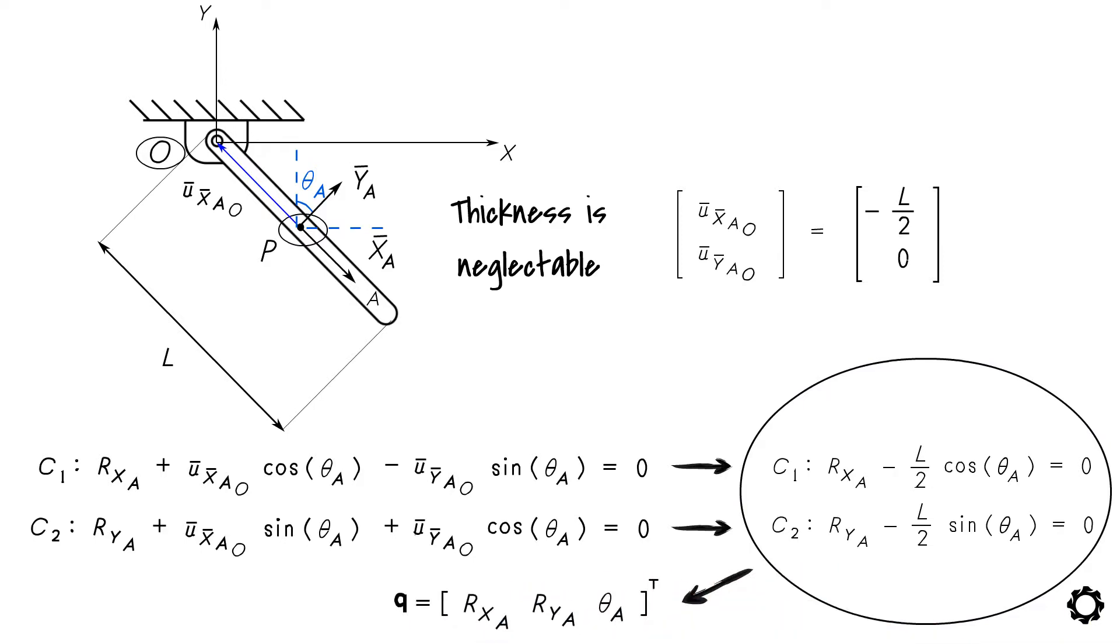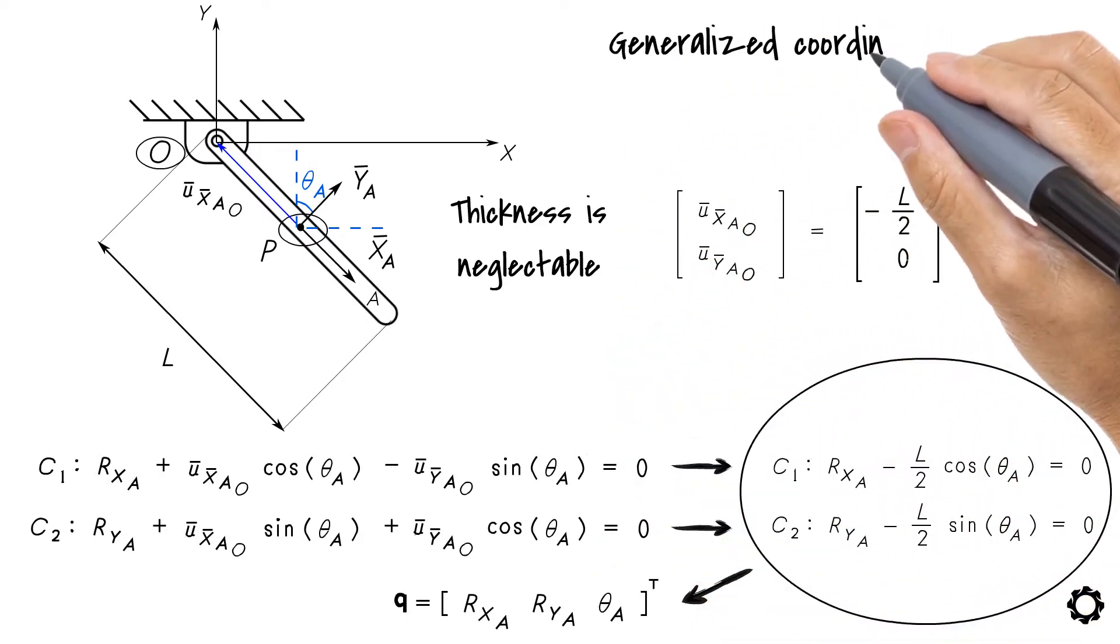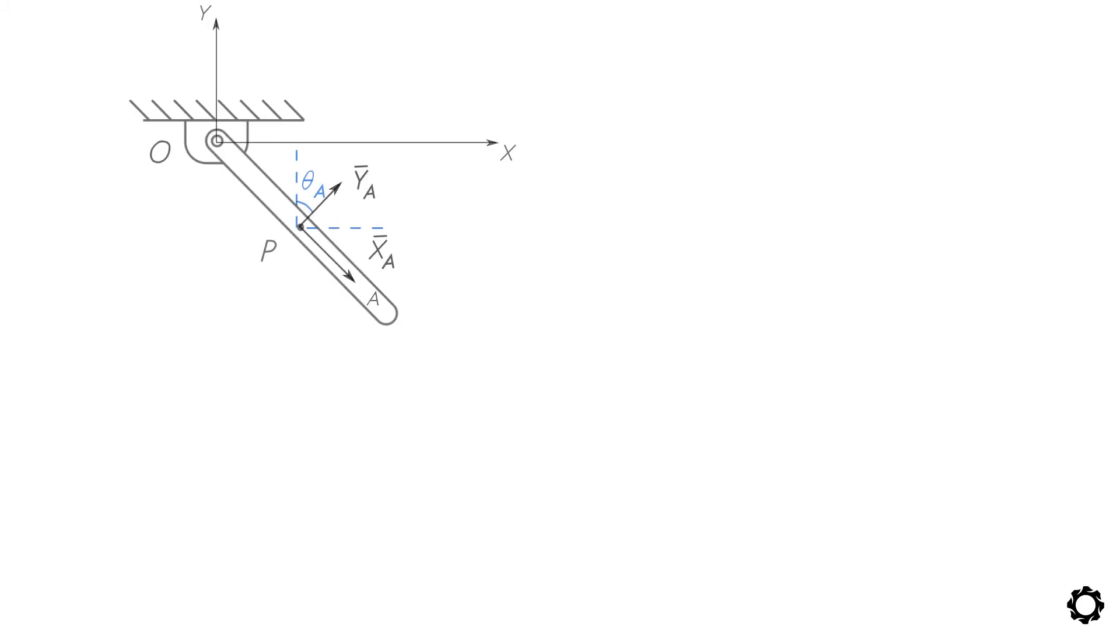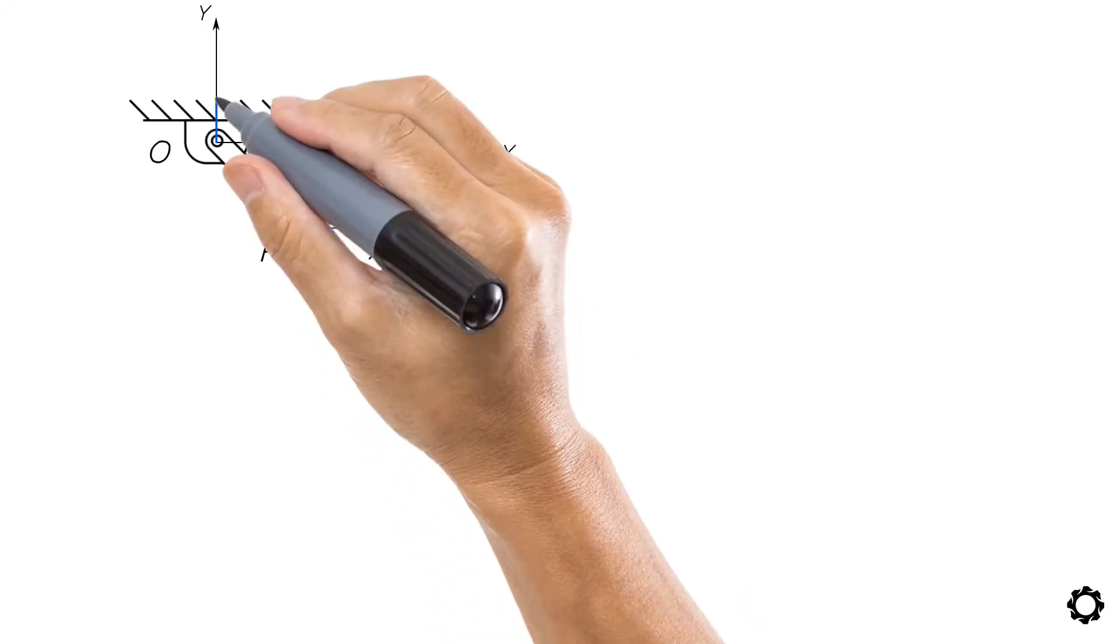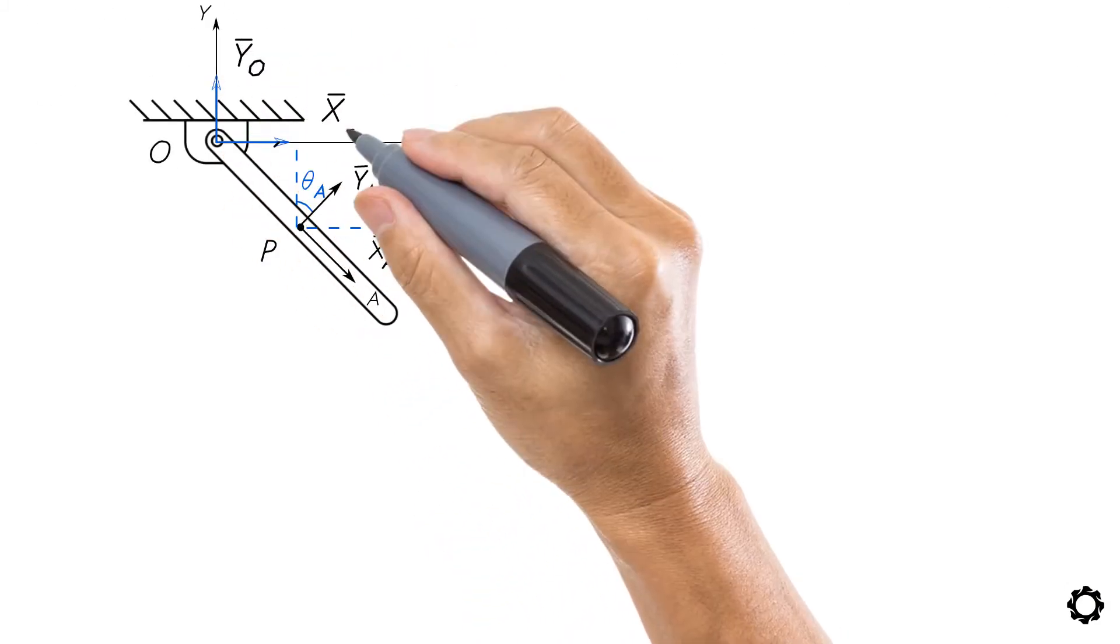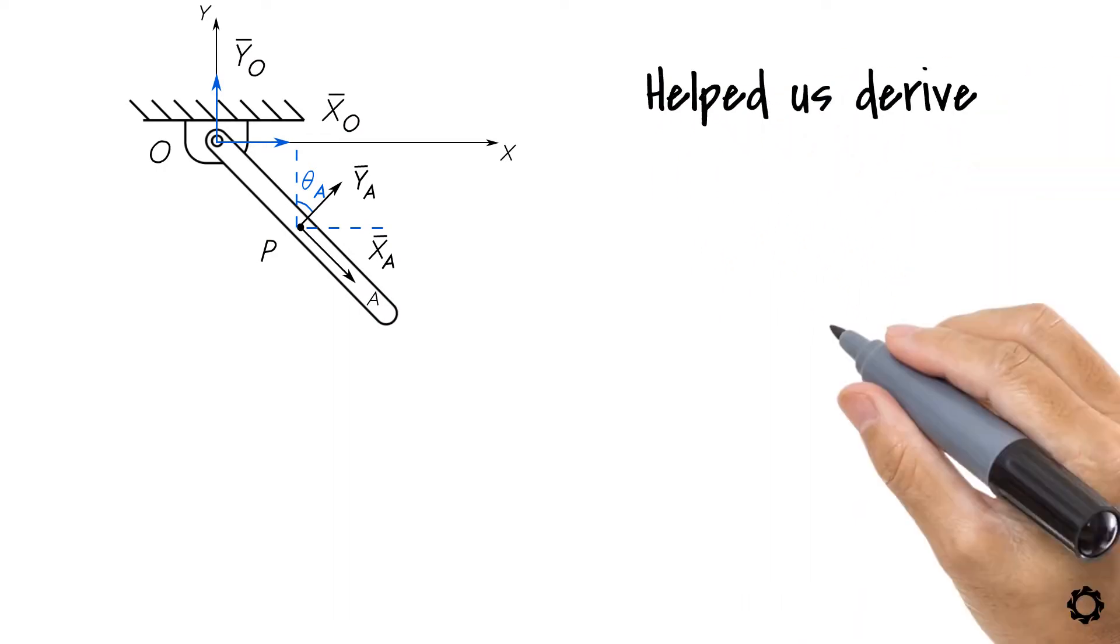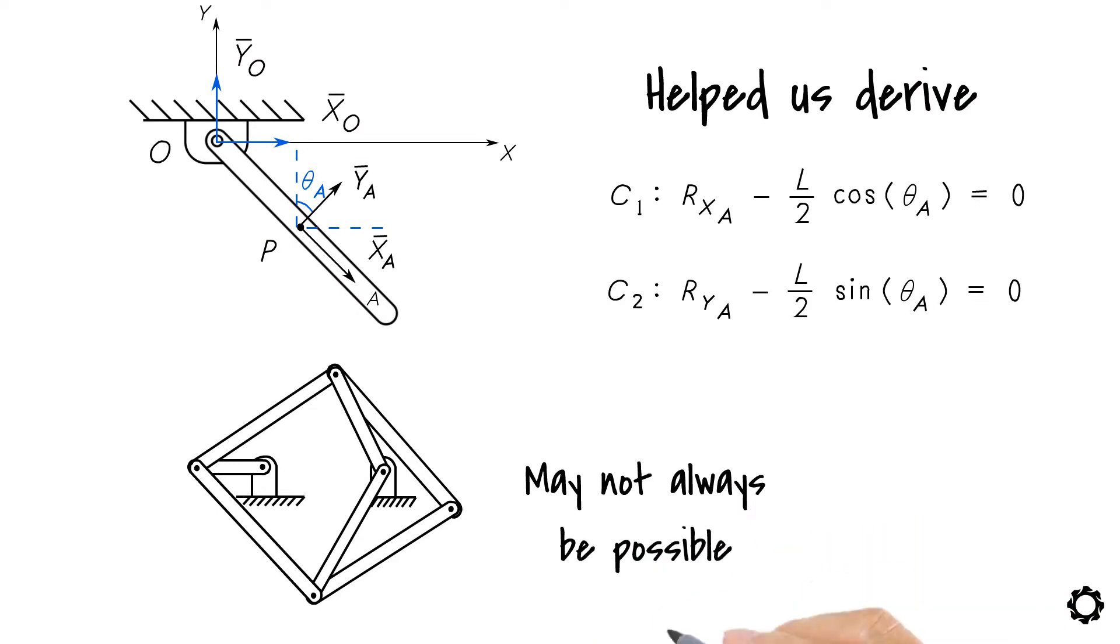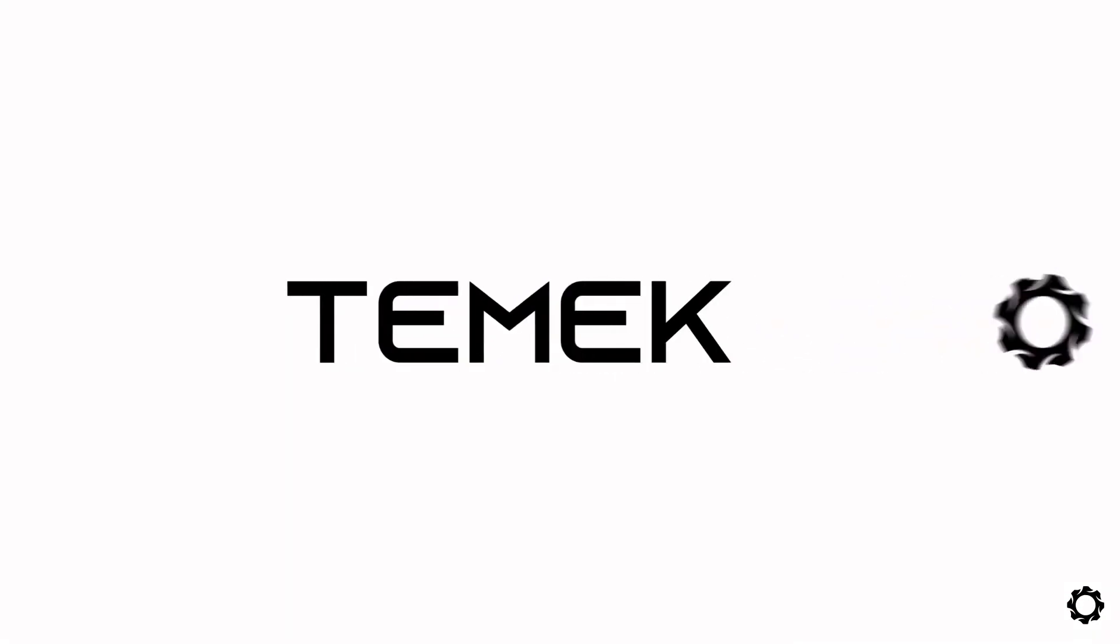Nice! You might notice that the generalized coordinates of the ground body are not needed here. In case of the simple pendulum, we were able to select the global coordinate frame to coincide with the ground body, which helped us derive simpler constraints. In complex mechanisms, this may not always be possible. Thanks for watching, and see you soon!